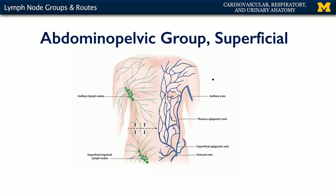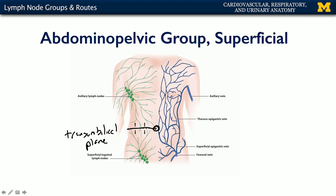Superficially across the abdomen and the pelvis, we have a rather useful dividing line known as the trans-umbilical plane. With respect to lymphatic drainage, anything inferior to that trans-umbilical plane — marked by the umbilicus, your belly button — is going down toward those superficial inguinal nodes.